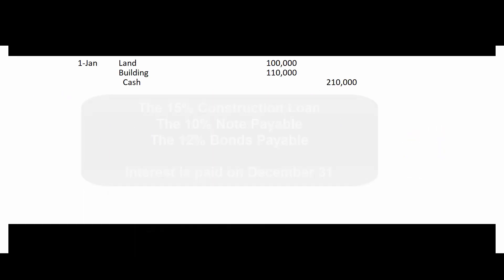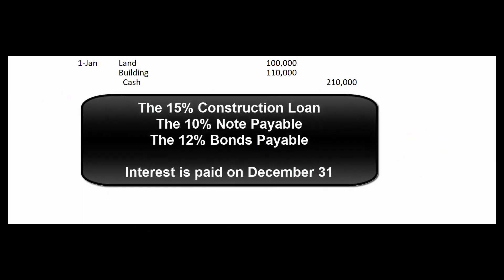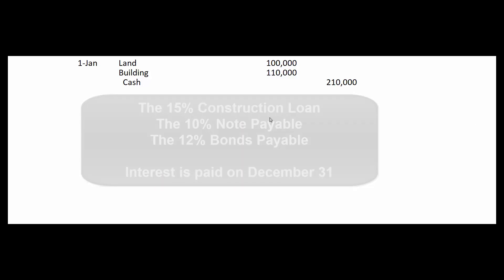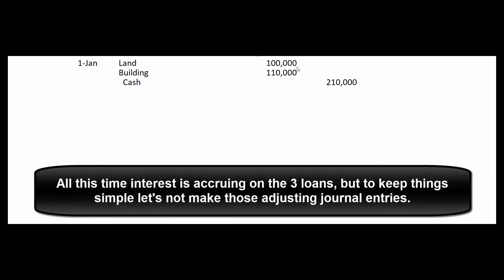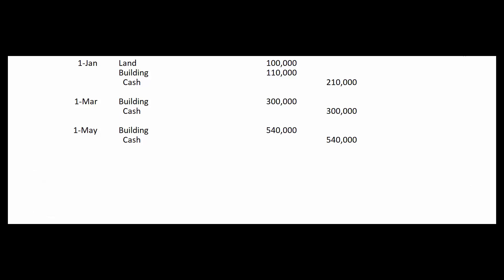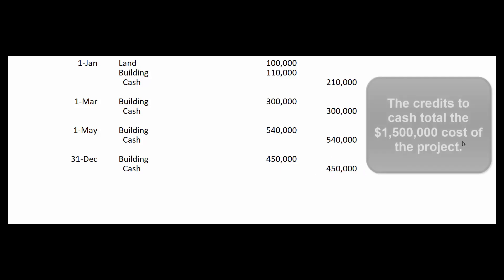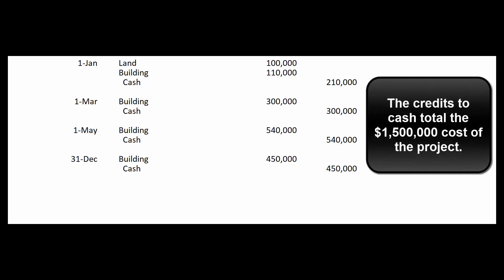Now let's look at the journal entries. All interest is paid at year-end on December 31st. On January 1st, we debit Building and credit Cash for $210,000. On March 1st, we debit Building and credit Cash for $300,000. On May 1st, we debit Building and credit Cash for $540,000. On December 31st, we debit Building and credit Cash for $450,000.